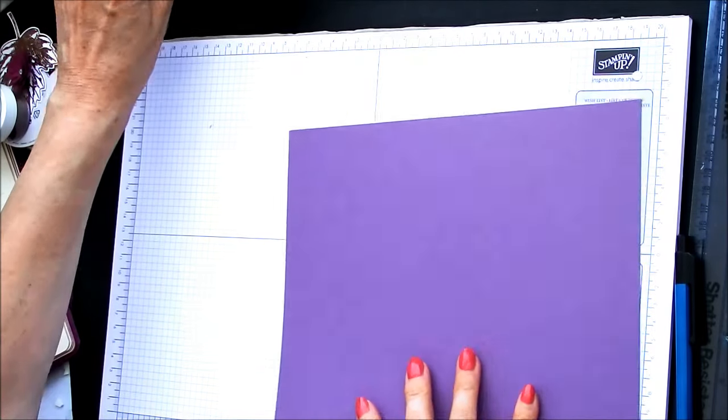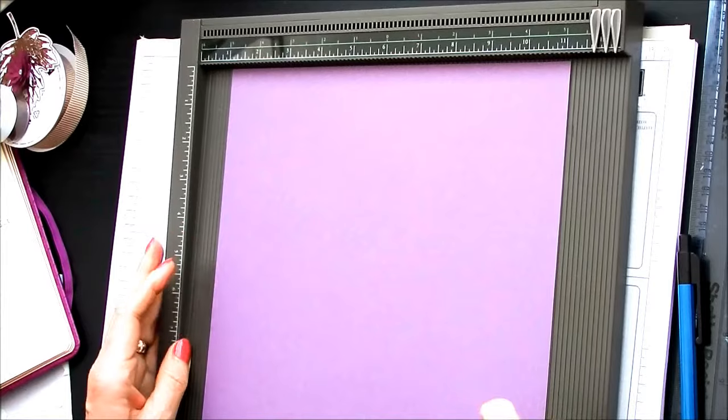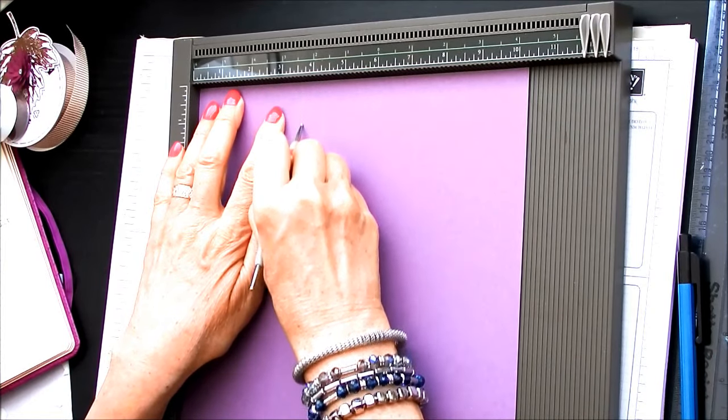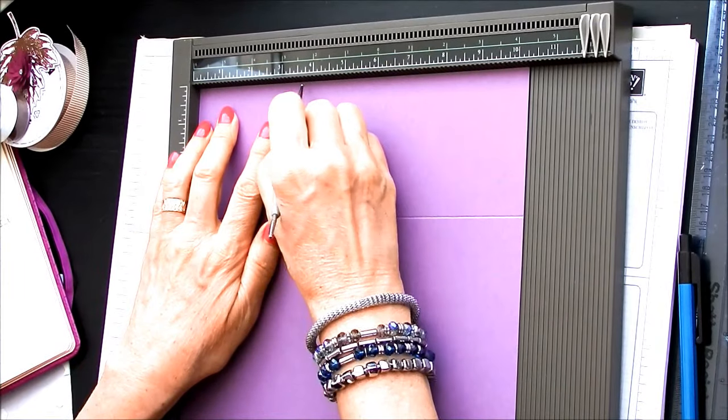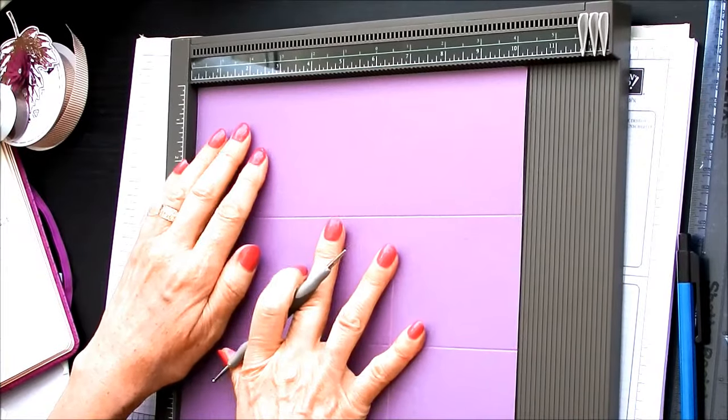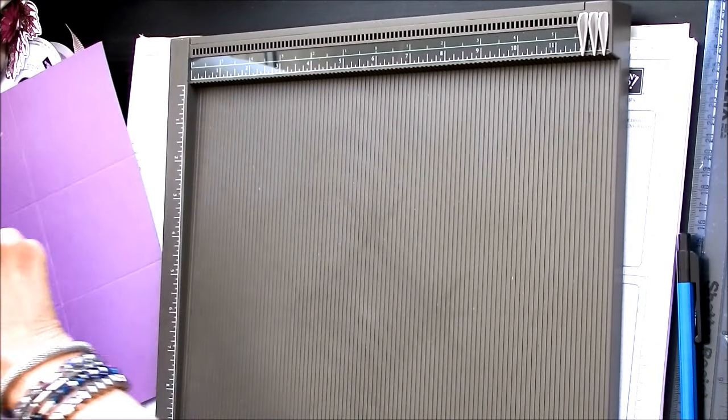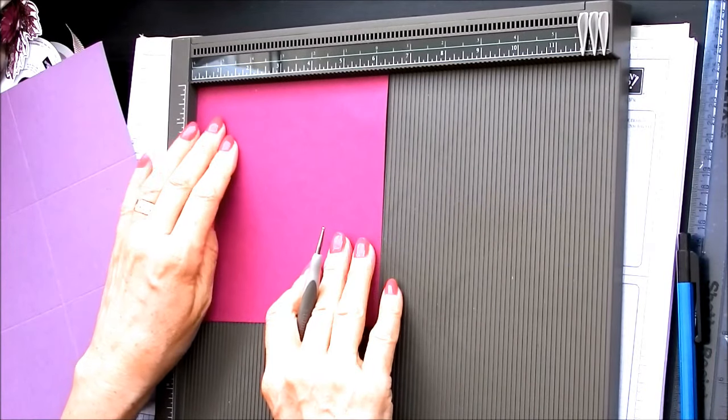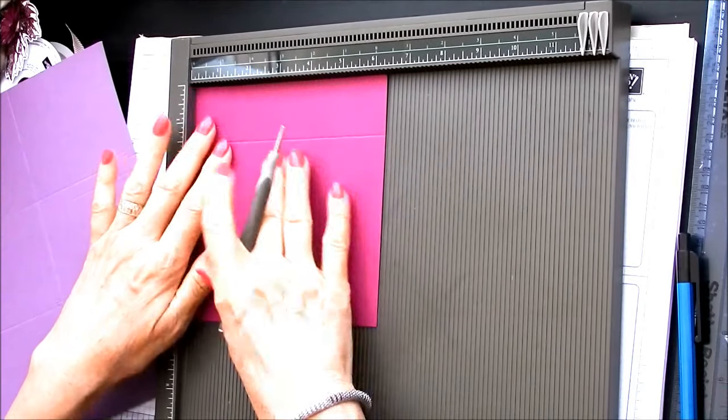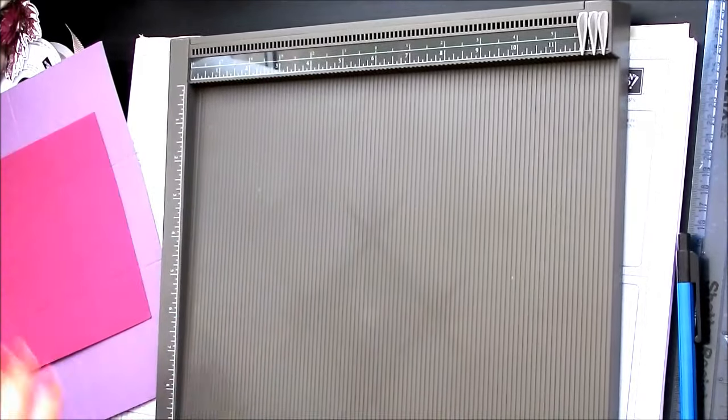So we are now going to score the main part of our cardstock which measures ten and one-eighth by ten and one-eighth. And we are going to score that today on all four sides at three and a half inches. And while we've got the scoreboard out we're going to score our lid which measures six and three sixteenths by six and three sixteenths. And we're going to score that at one and a half inches on all four sides. So that's all our scoring done. Put the board away.